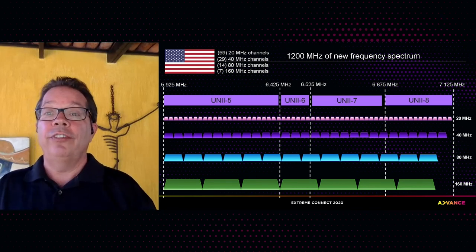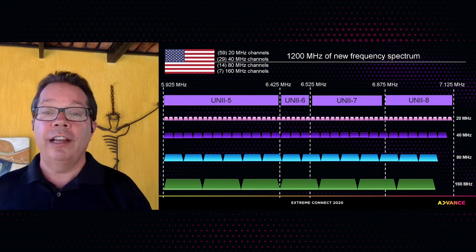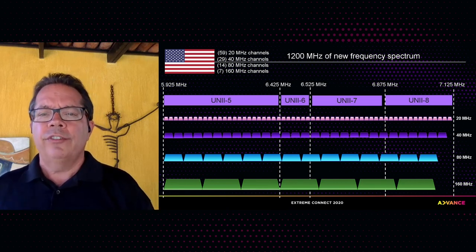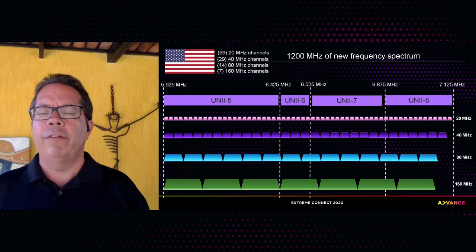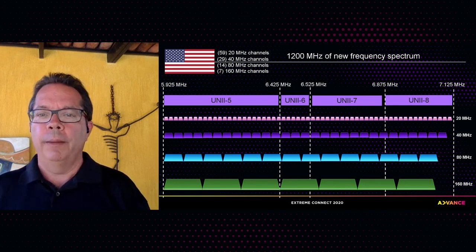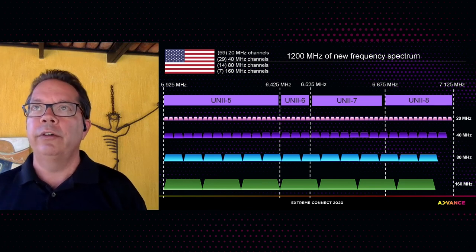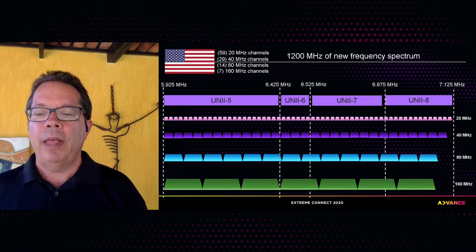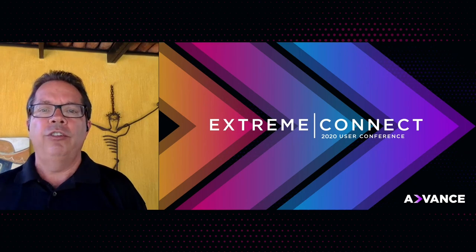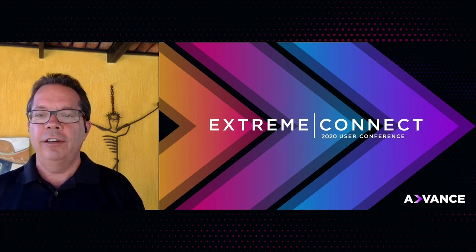With 6 GHz, you'll have to think about not just 2.4 GHz and 5 GHz coverage, but also 6 GHz coverage. It will bring a whole new dimension to wireless LAN design. I hope you've enjoyed this presentation. My name is David Coleman at Extreme Networks — thanks very much, and we hope you'll tune in again.